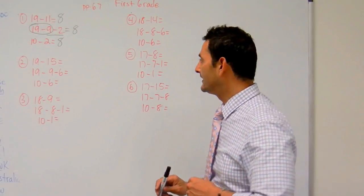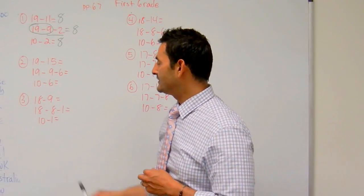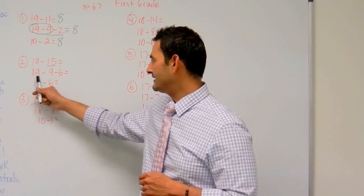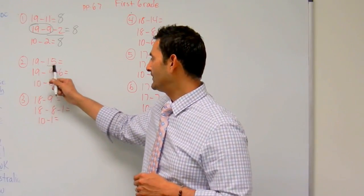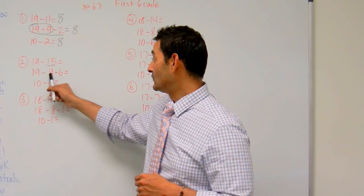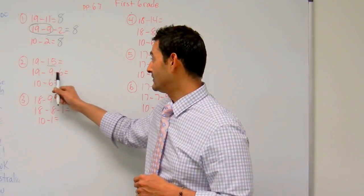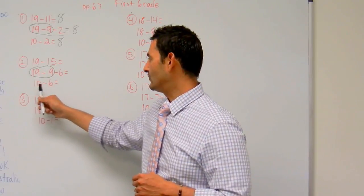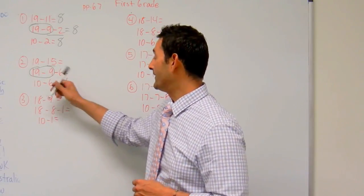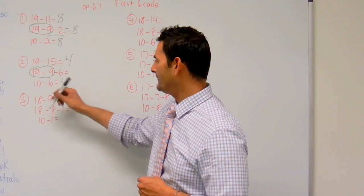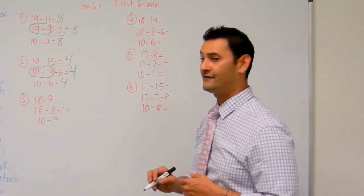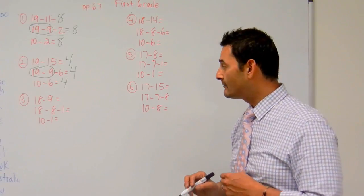Now let's take a look at the next one, 19 minus 15. I'm going to decompose this number to find a 10 to subtract this 19 from, so that's going to be a 9. So what's left over? 6. So 19 minus 9 is 10, minus 6. So 10 minus 6 is 4. 19 minus 15 is 4. 19 minus 9 minus 6 is also 4. Let's take a look at number 3.